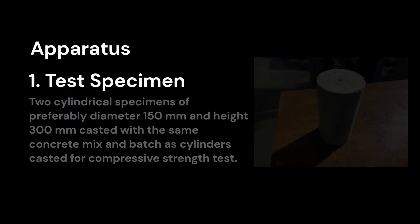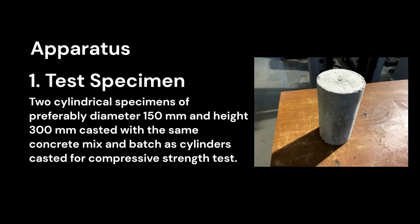Now let us see what apparatus is required to perform this experiment. First, test specimens: two cylindrical specimens of preferably diameter 150 mm and height 300 mm casted with the same concrete mix and batch as cylinders.